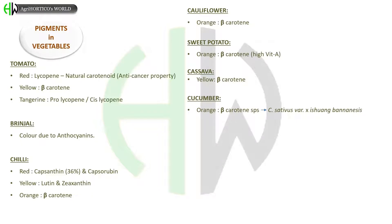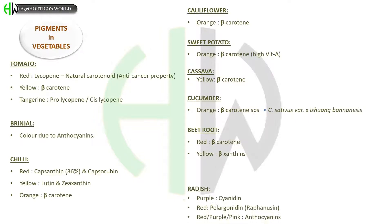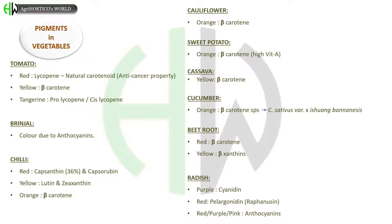In cauliflower and sweet potato, orange color is due to beta-carotene. In cassava, yellow color is also due to beta-carotene. In cucumber, orange color is due to beta-carotene species and it is a cross between Cucumis sativus variety and Xishuang bananensis. In beetroot, red color is due to betacyanin and yellow color is due to betaxanthins.